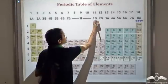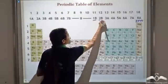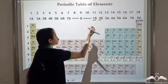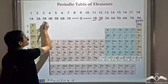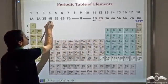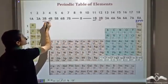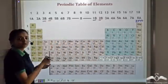He placed 1B and 2B towards the right, with the group 8 elements, and 3B and 4B towards the left.